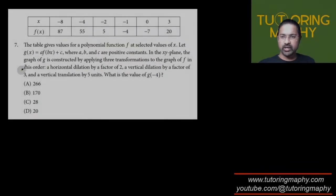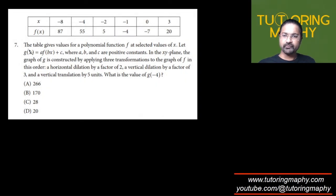Let's talk about the next question. Question 7 says that the table gives values for a polynomial function f at selected values of x. So there are some selected values of x and you know the polynomial function's values are given.